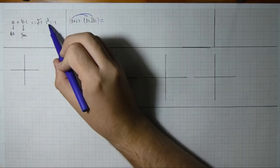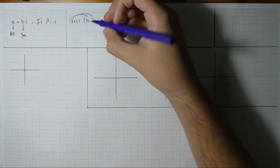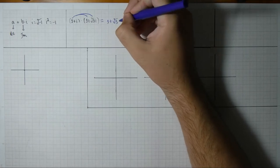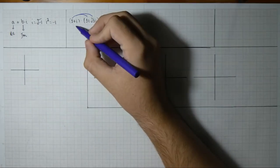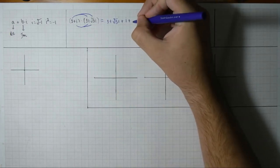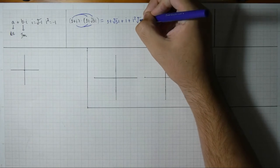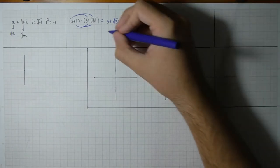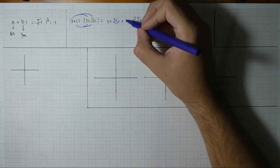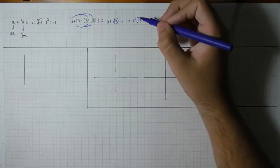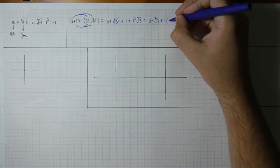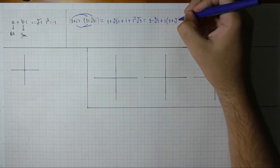So when we see i squared, we write minus 1 and develop. Applying the distributive property, we get 1 plus i plus i·√3 plus i²·√3. Since i squared is minus 1, we substitute that in. We can't add the remaining two terms directly, but factoring out the i makes it clear what the real part and what the imaginary part are.